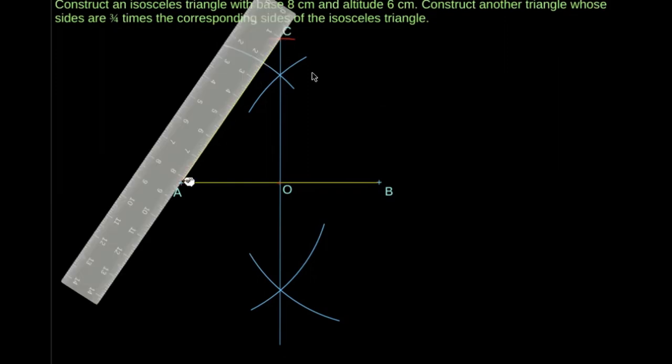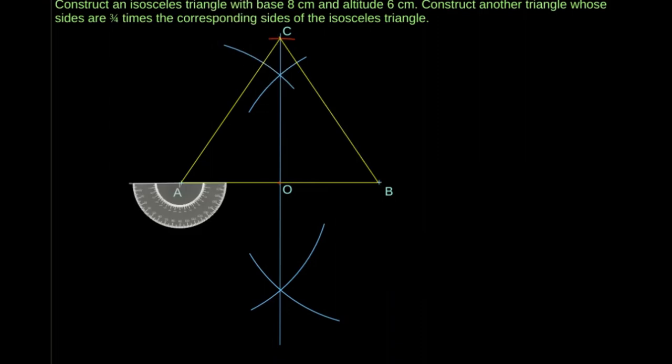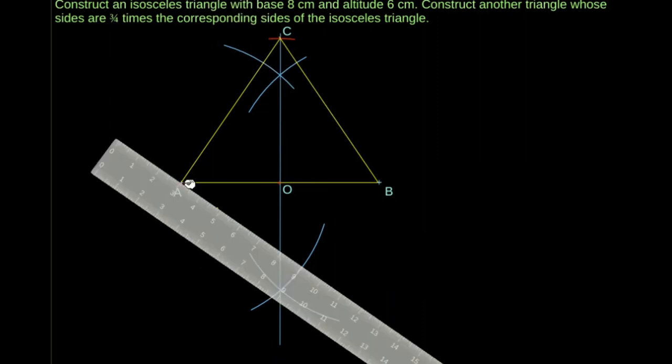Now, join AC and BC. The triangle ABC is constructed. Now, draw an acute angle at point A.